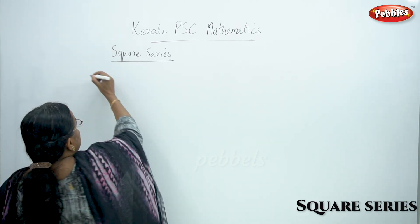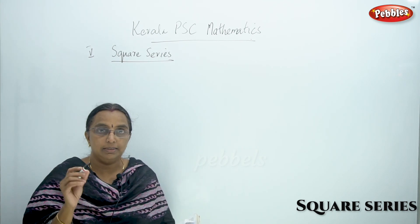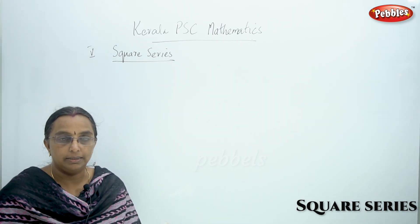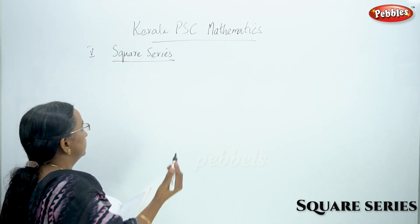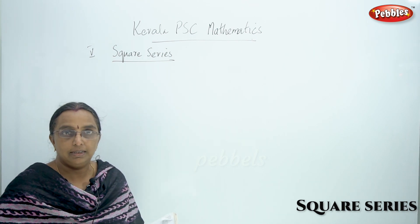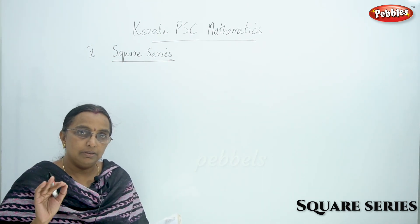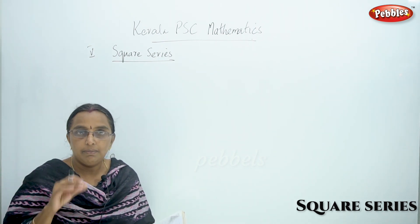The next topic is Square Series. Square Series is one type of number series. We need to know the series. We use square by heart: 1, 2, 3. We use square by heart when we don't know the number.